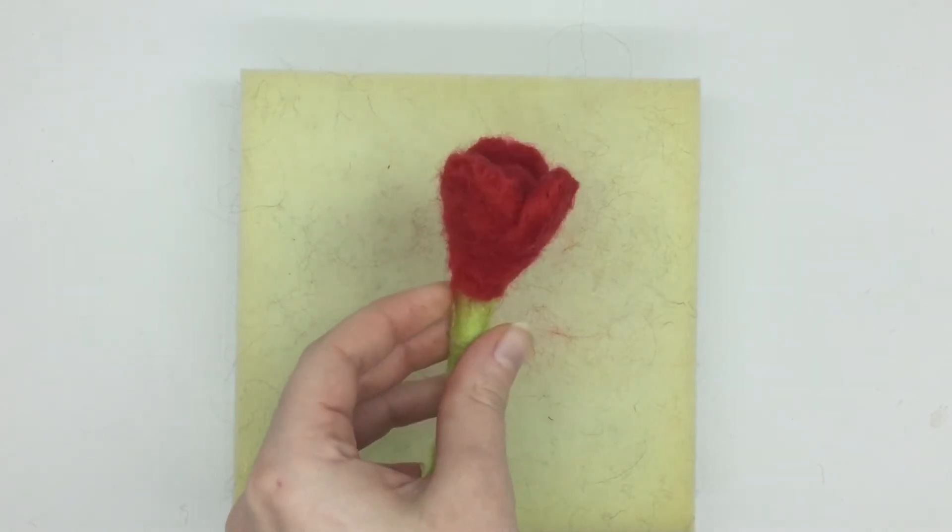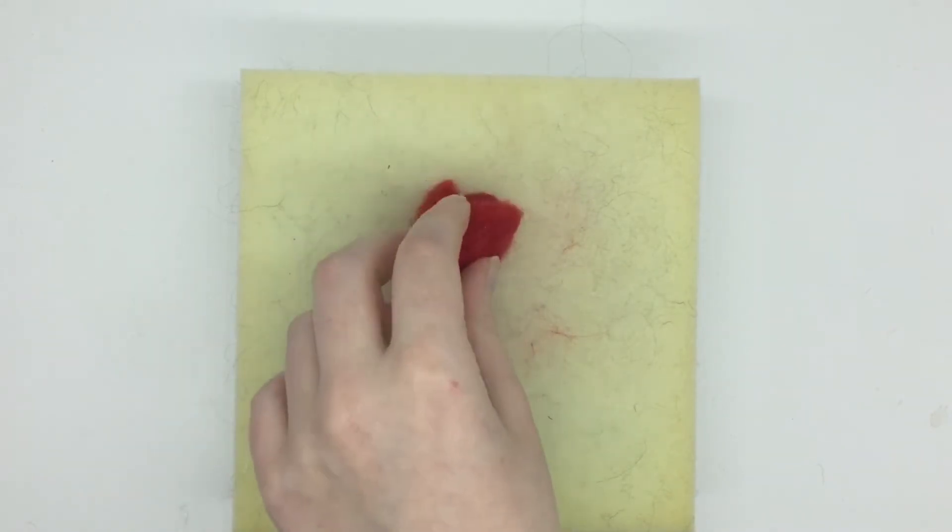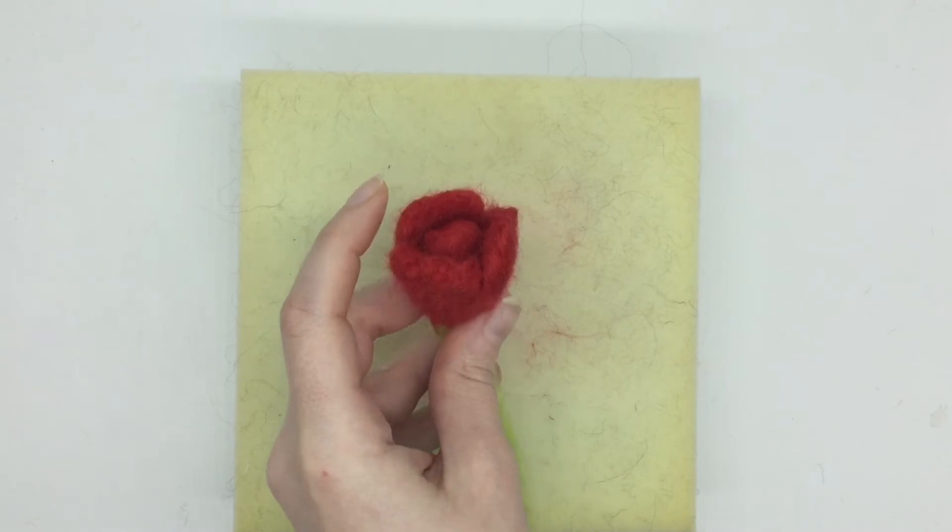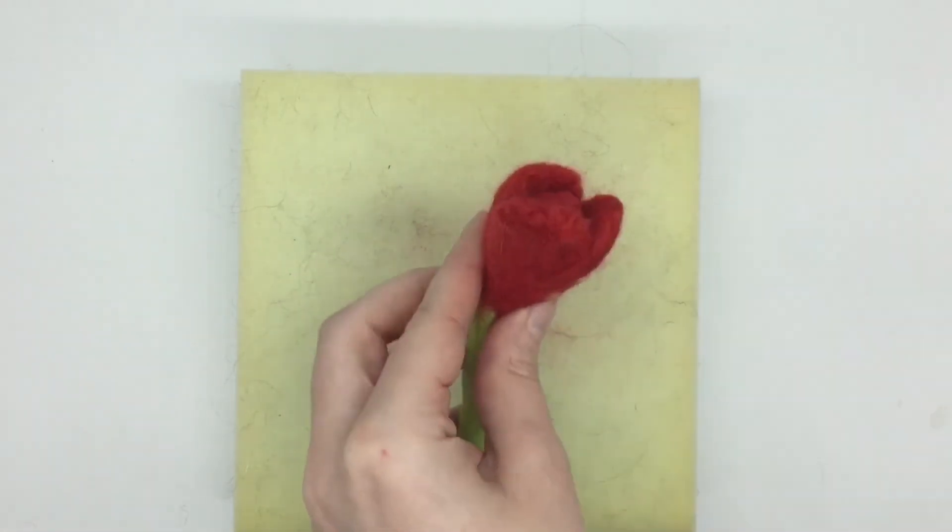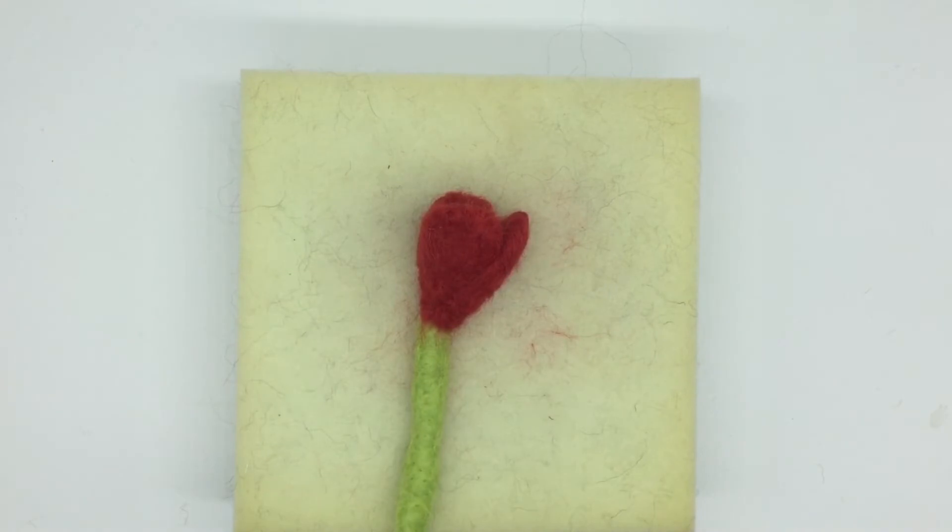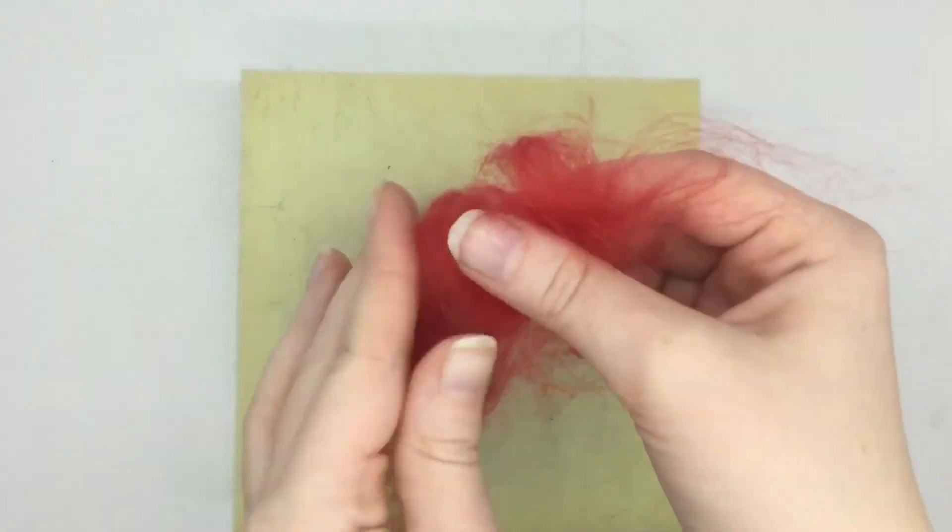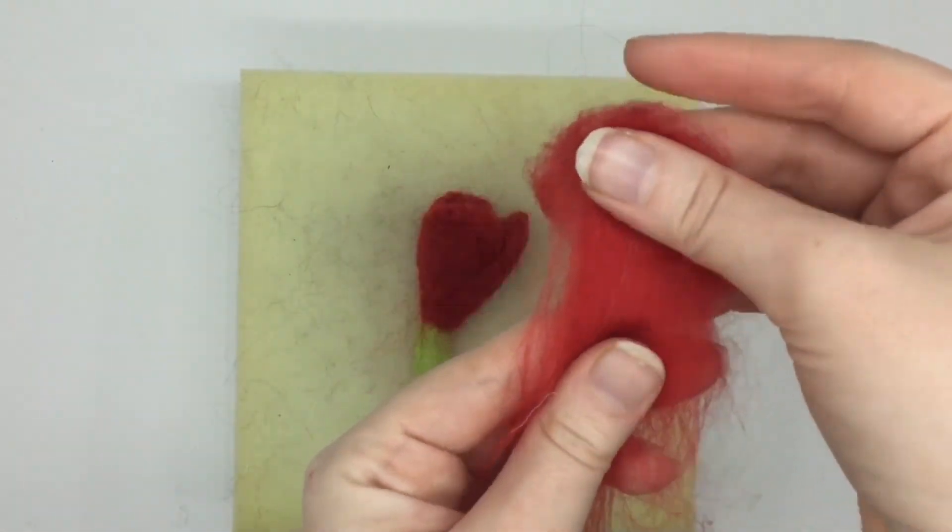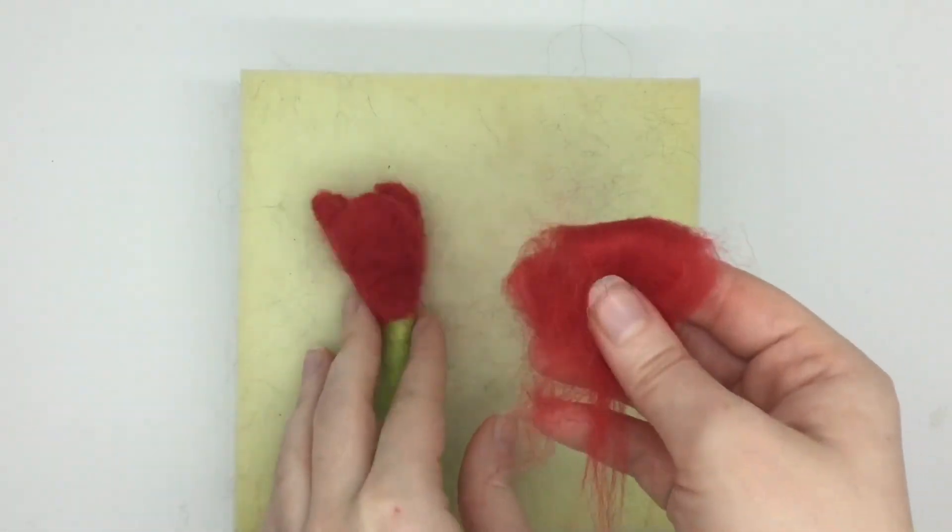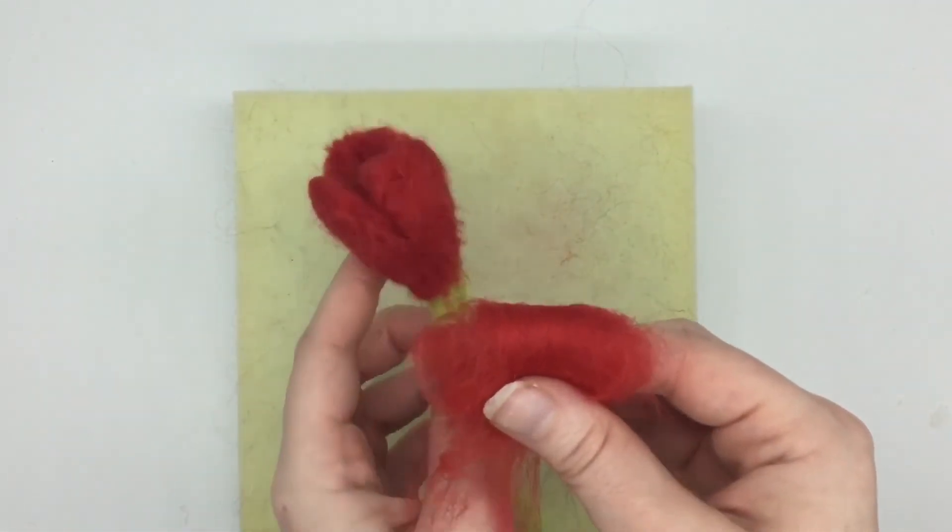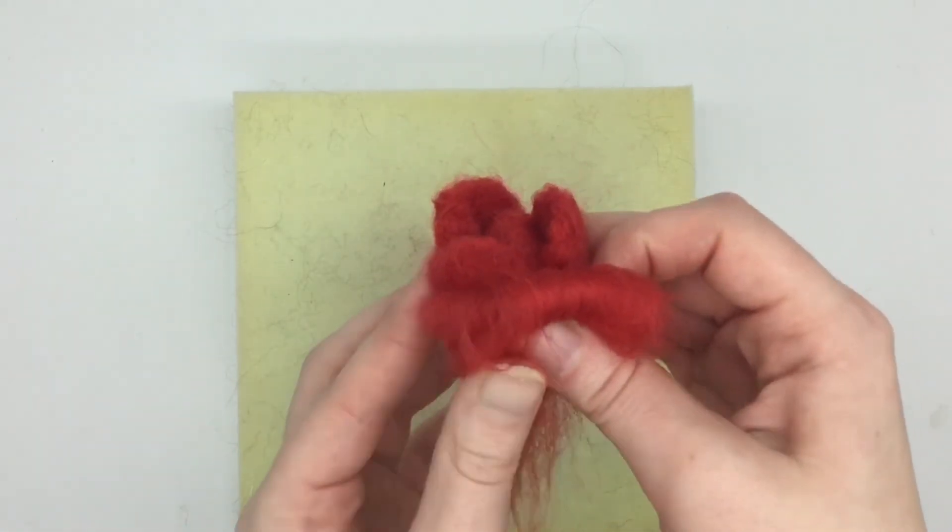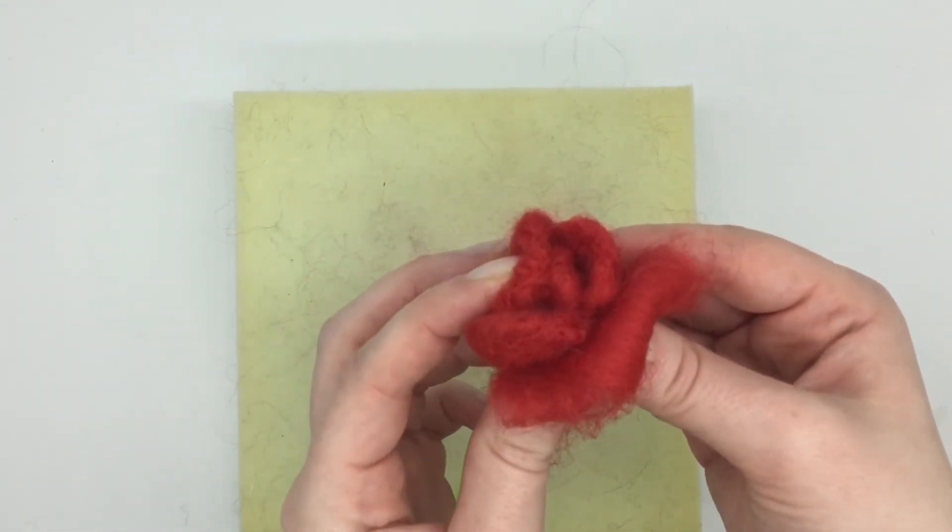Now we just want to keep on adding more petals, and these need to be slightly larger than the first petals that we've just done. You also want to felt the petals to cover the gaps of the first initial petals. As you can see, this petal once felted will be positioned here on the rose, so it's over that gap.